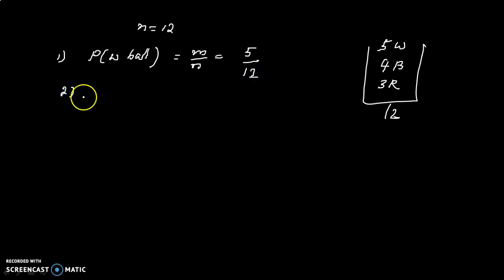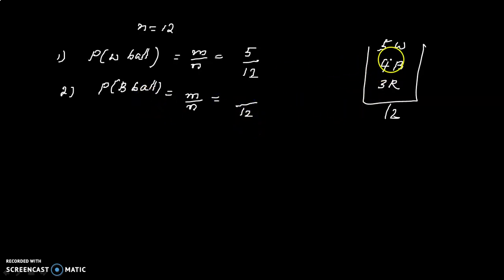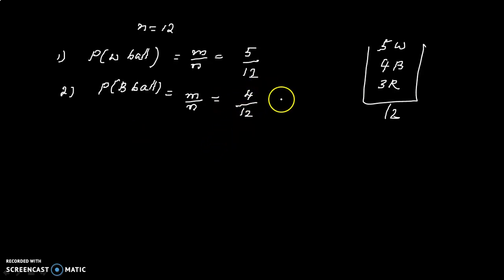The second question: find the probability that it is a black ball. Probability by definition is favorable cases m divided by total number of cases n, which is equal to 12. There are 4 black balls, so the favorable number of cases m is equal to 4. Probability is equal to 4 by 12.